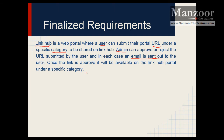For example, if I have a URL say www.manzoorthetrainer.com, I can go and upload it or share it under the education or training category. Now admin will look at that and check whether it is valid or not, then admin will go for approving or rejecting that URL. Once it is approved it will be available for all users on Link Hub. If it is rejected, a message will be sent to the user who submitted it saying the URL has been rejected due to a specific reason.